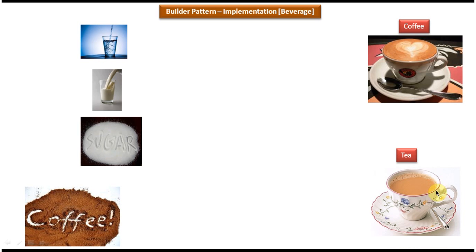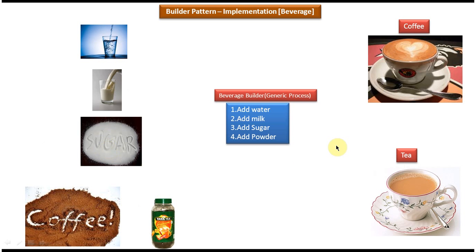Similarly, if you want to prepare tea, you have to use water, milk, sugar, and instead of coffee powder you use tea powder. Using these small components we can prepare either coffee or tea. The process is the same — you need water, milk, sugar, and either coffee powder or tea powder. So I can define a generic process: step 1 add water, step 2 add milk, step 3 add sugar, step 4 add powder. Only the powder changes in step 4.